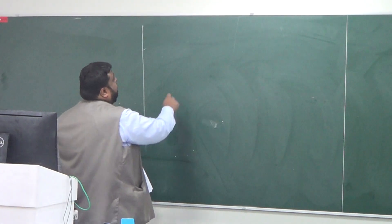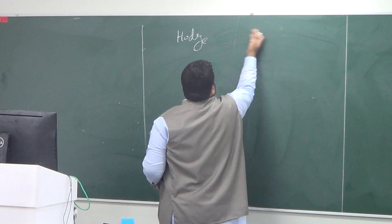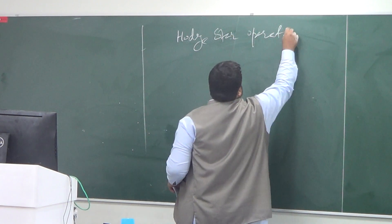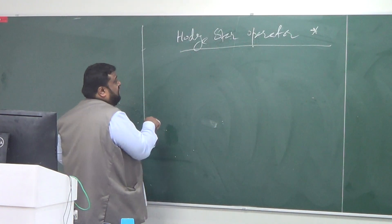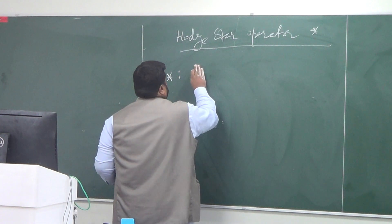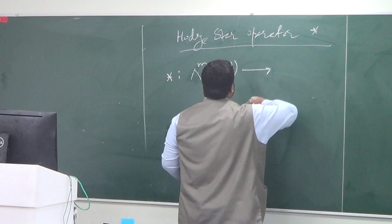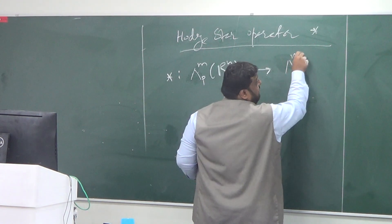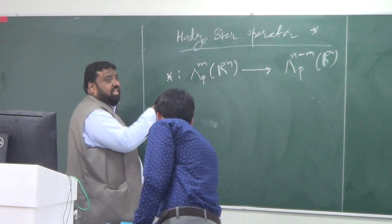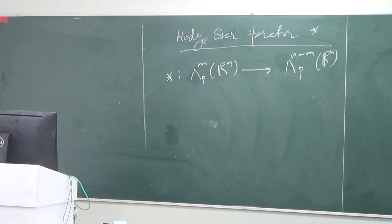Let's begin by recalling the definition of the Hodge-star operator. The star operator, which we denote as star, is a linear operator. For example, it maps M-forms in R^n to (N-M)-forms in R^n at a point P. Since it's a linear map, it is sufficient to describe its action on the basis of that space.